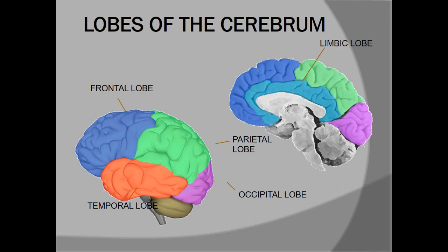Normal functions of these parts of the brain are very important to remember, because whenever there is a lesion inside any of these parts, there will be distortion or abnormality of normal brain function. So first of all, we will start with the knowledge of normal functions of these parts of the brain.